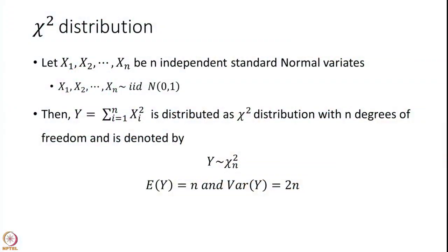First, we consider the chi-square distribution. Let x₁, x₂, ..., xₙ be n independent and identically distributed standard normal variates — that is, each distributed as normal with mean 0 and variance 1. Then a random variable y defined as the summation of xᵢ squared follows a chi-square distribution with n degrees of freedom, denoted y ~ χ²(n). The expected value of y is n and the variance of y is 2n — notably, the variance is exactly double the expected value.